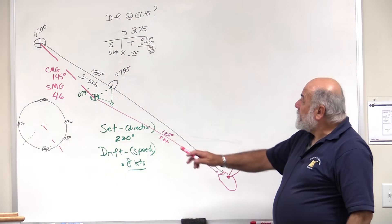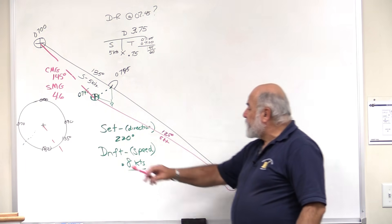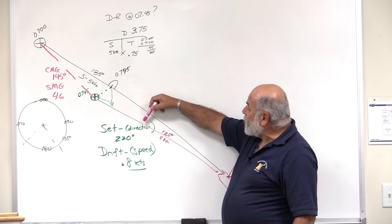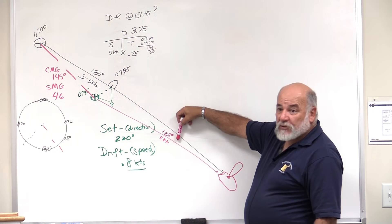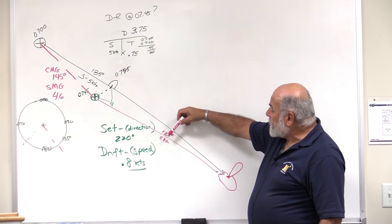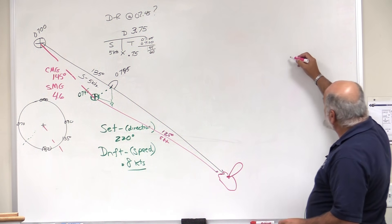If I knew what the set and the drift of the current were, if I know what the course that I want to make good is, let's say, for example, this 125 now, and I know what my speed is, I can go to a compass rose.